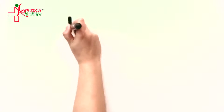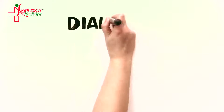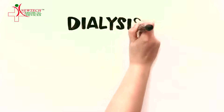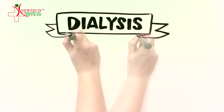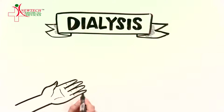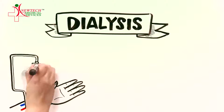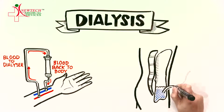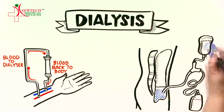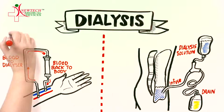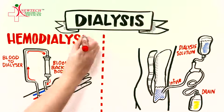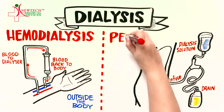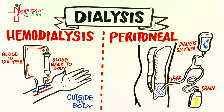Dialysis is when we replace the function of the kidneys using special equipment to clean the blood. There are two types of dialysis: hemodialysis, which happens outside the body, and peritoneal dialysis, which happens inside the body.